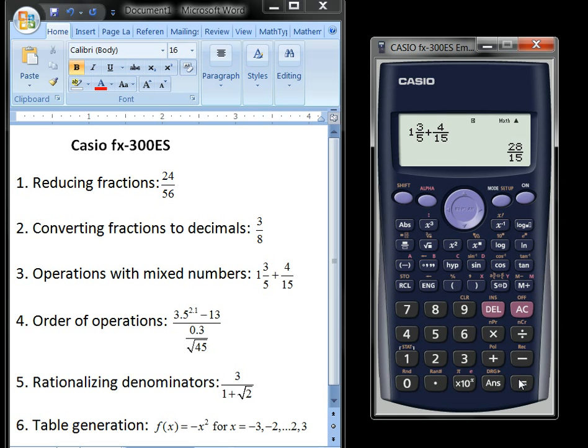And so notice that returns the answer of 28 fifteenths. So that's an improper fraction. If a student would want to convert that to a mixed number, we would just hit the shift key and then this converter key for improper fractions to mixed numbers. So that's the shift key and the SD key does that. And notice if I do that one more time, it turns the mixed number back to an improper fraction.